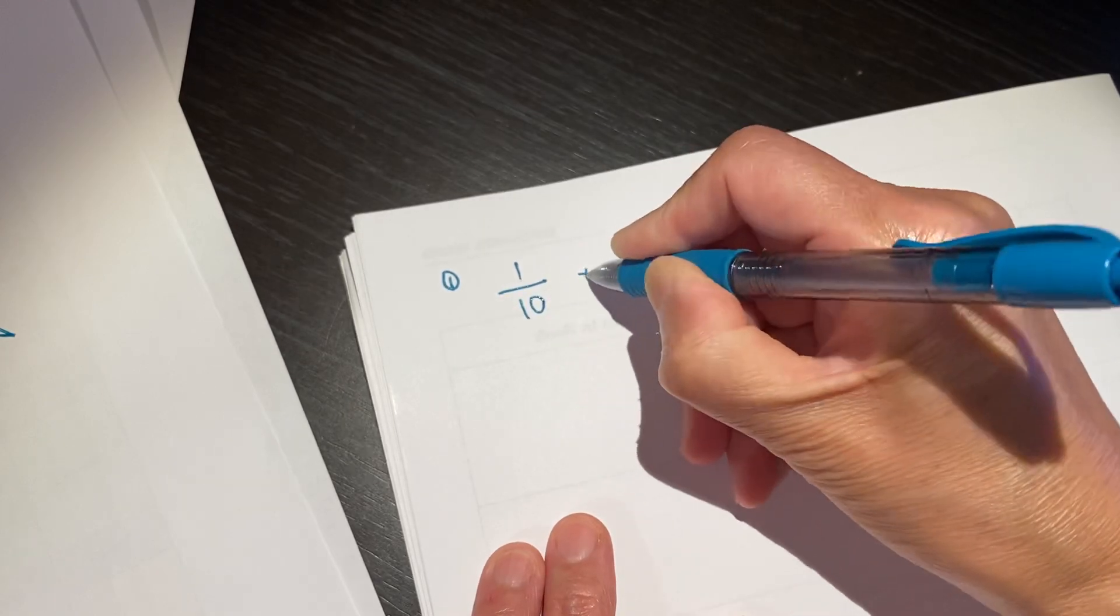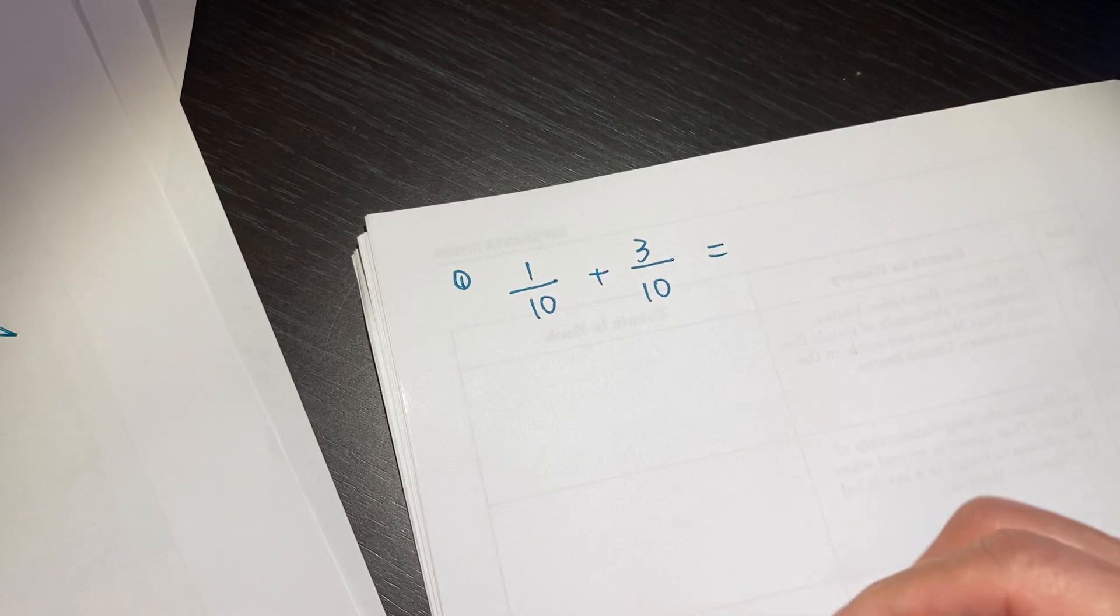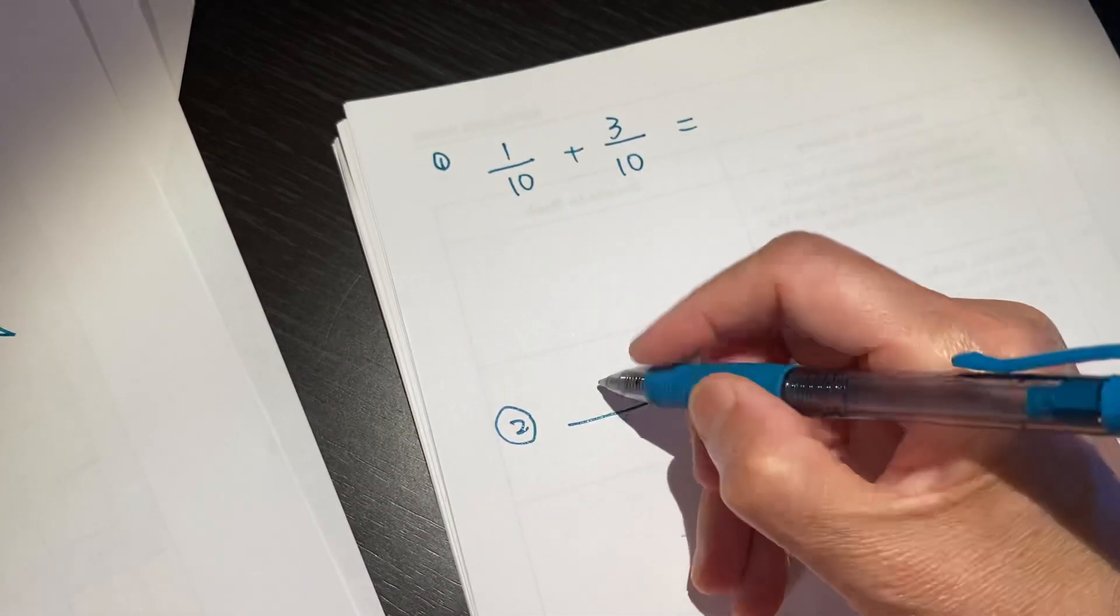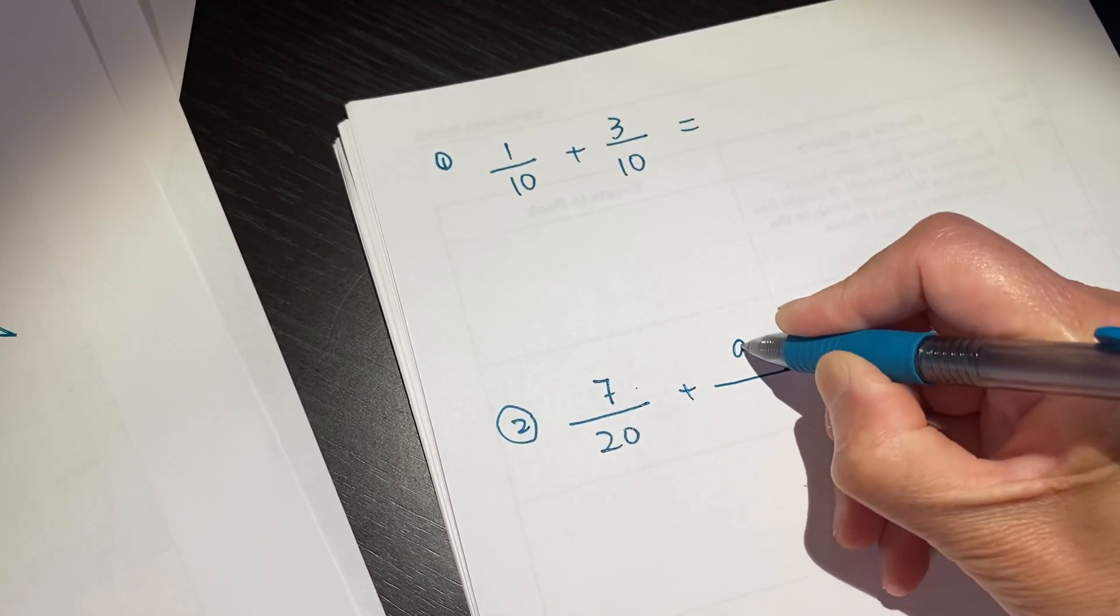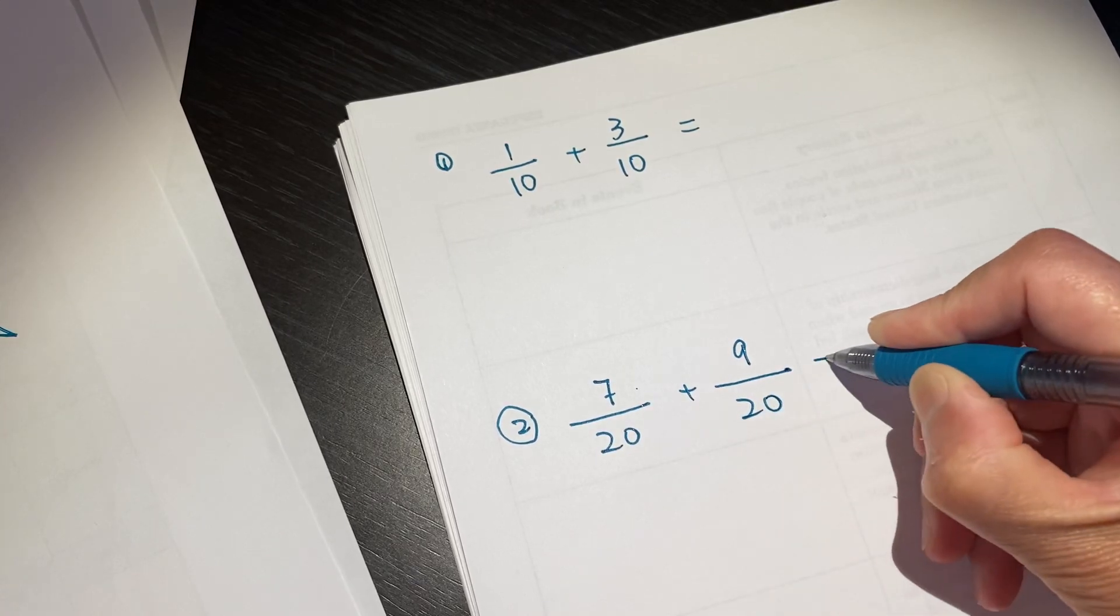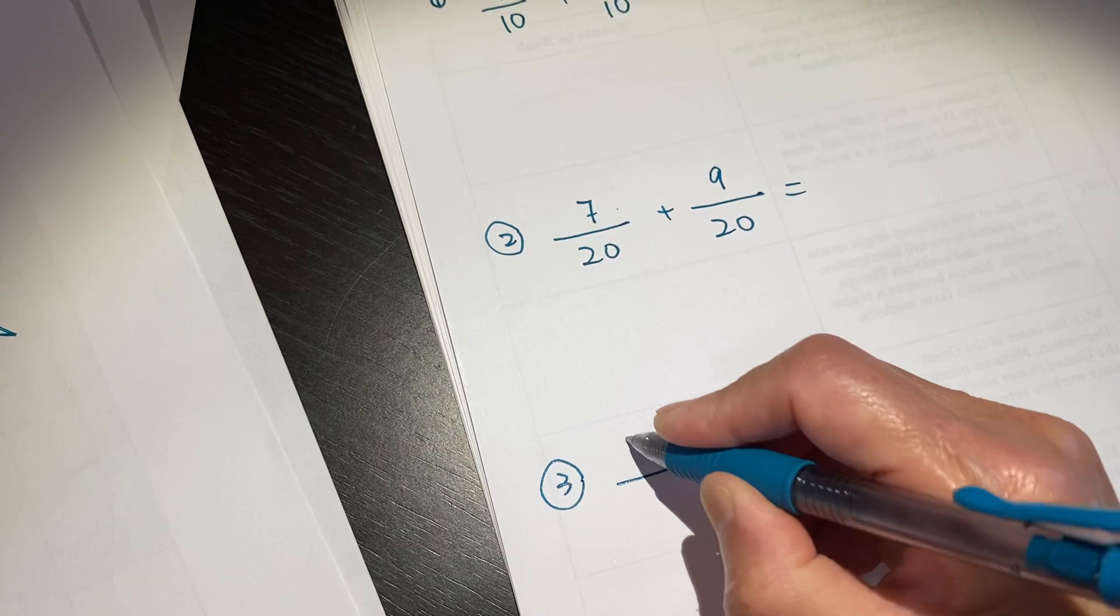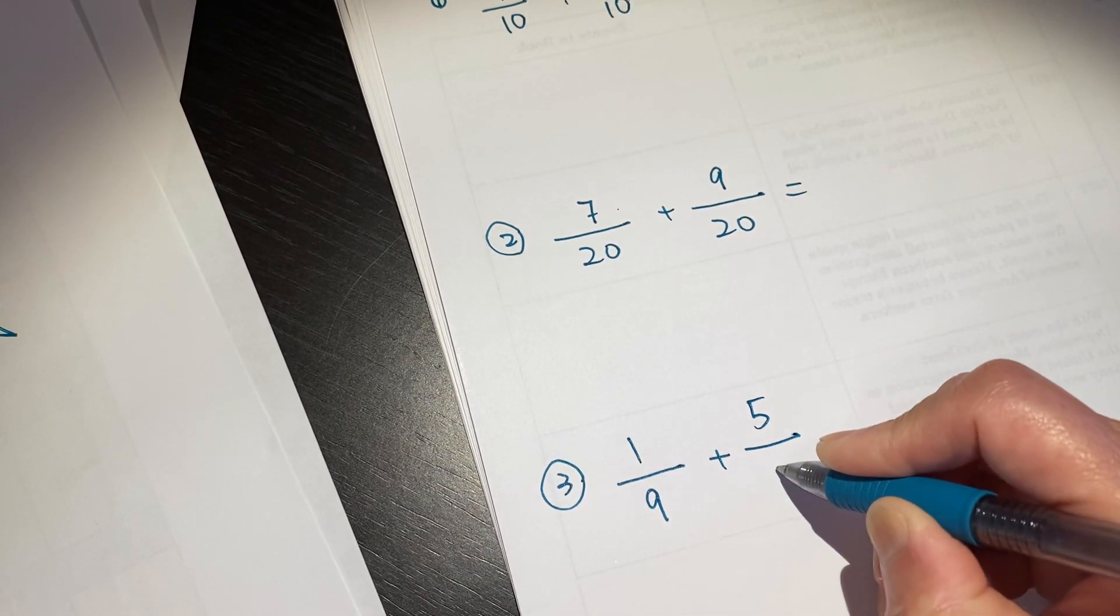1 over 10 plus 3 over 10. The second one, 7 over 20 plus 9 over 20. The third one, 1 over 9 plus 5 over 9.